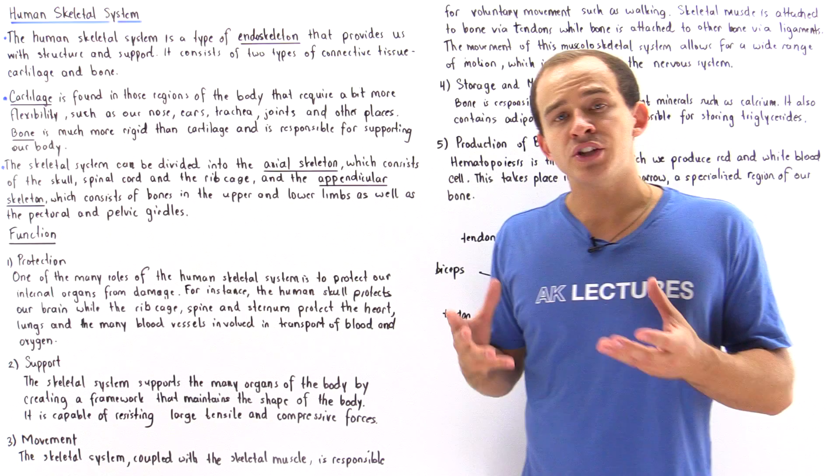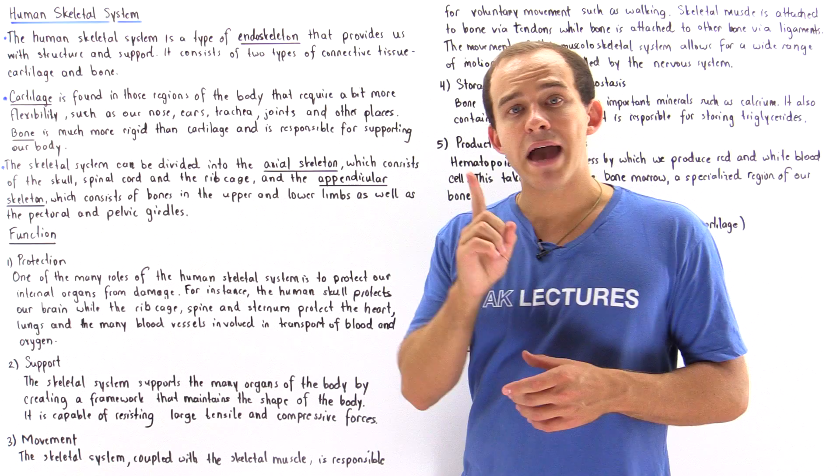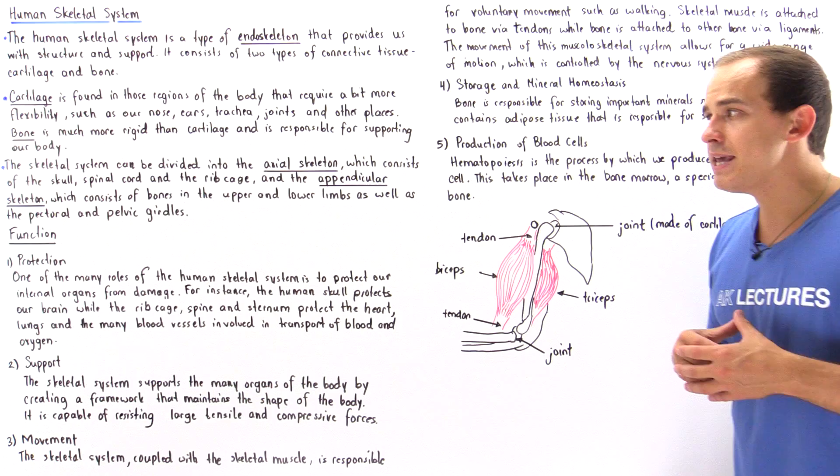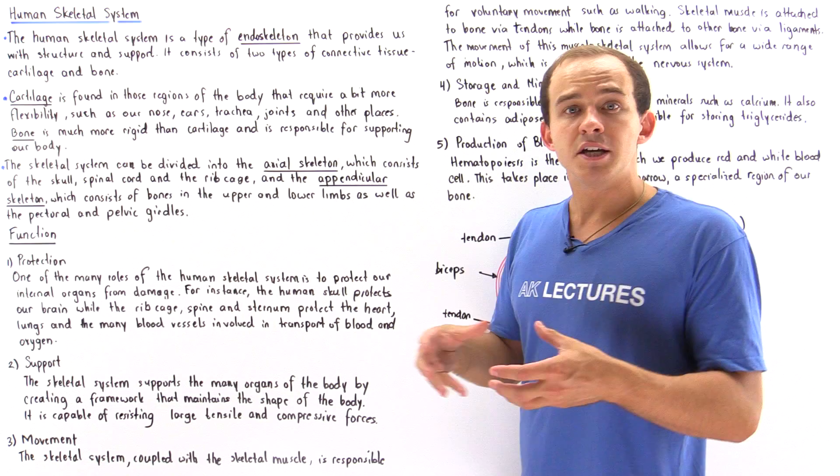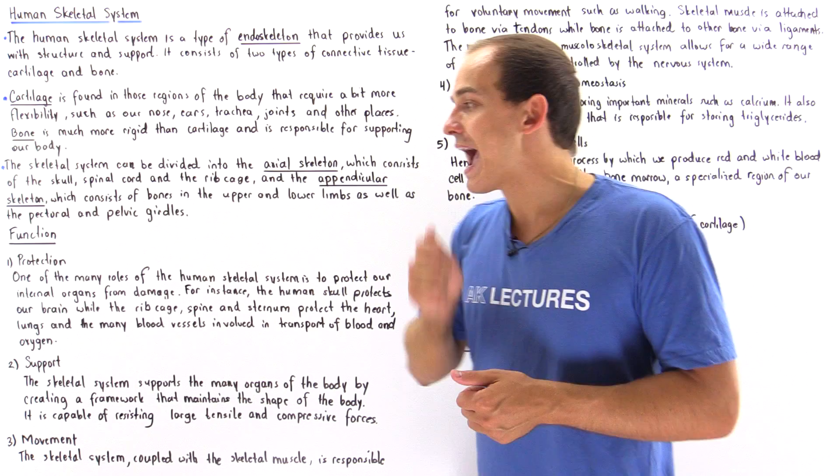One of the many roles of the skeletal system of the human body is basically to protect the internal organs of our body, such as the brain, the heart, the lungs, and other organs. For example, the skull is part of the skeletal system and it protects the brain, while the rib cage and the sternum basically protect the heart and the lungs and the vascular system found within this region. If someone hits us in the chest or in the brain, these bones will basically absorb some of the impact, some of the force, so that our internal organs aren't actually damaged.